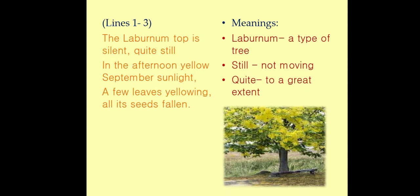The laburnum tree is silent in the afternoon yellow September sunlight, a few leaves yellowing, all its seeds fallen. The laburnum tree is silent — its leaves towards its top portion are not making any movement. It is an afternoon in September month and there is a good amount of sunlight on the tree. Some of its leaves have become yellow and all the seeds have fallen on the ground. The poet has described sunshine as yellow and the leaves of the tree are also described as yellow. The poet is trying to give a monotonous color to the surroundings, and the monotony represents sadness in these lines.